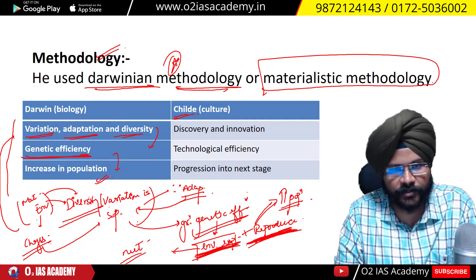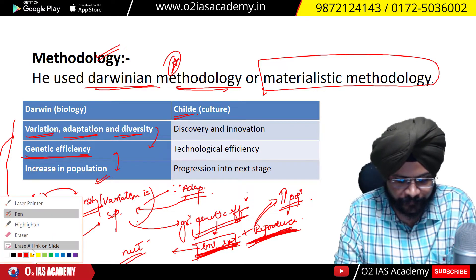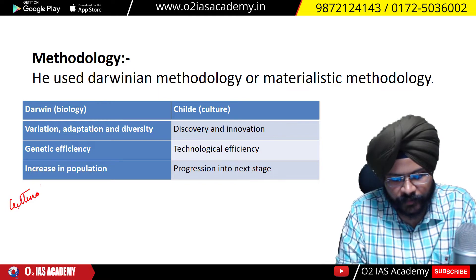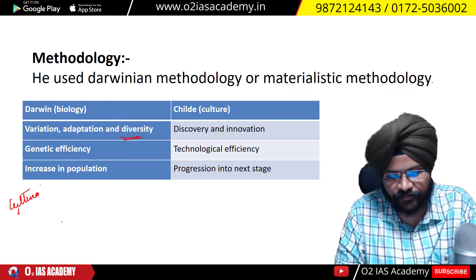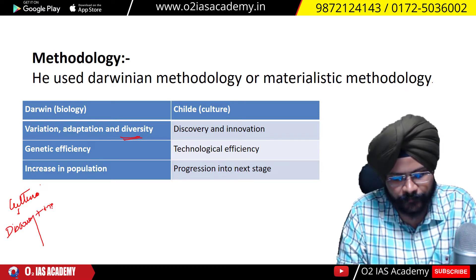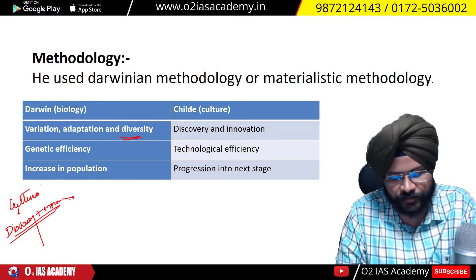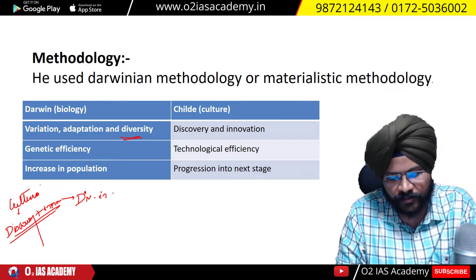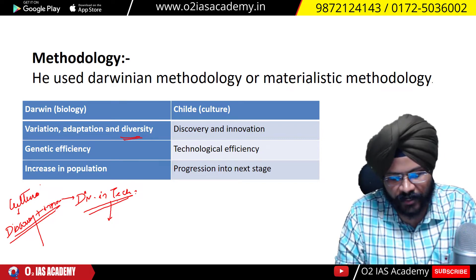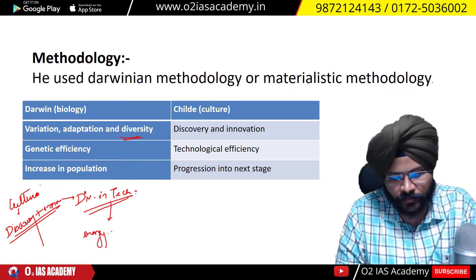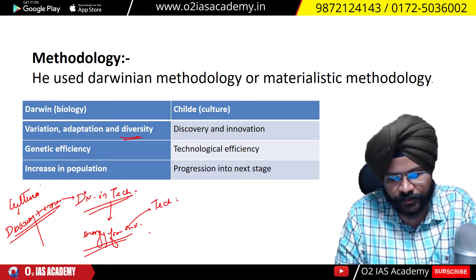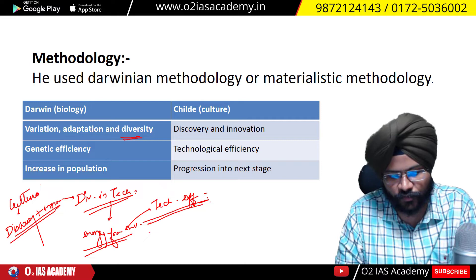Now, how did G.V. Childe adapt this to culture? G.V. Childe said that in culture, just as there was species diversity in biology, there is discovery and innovation in culture. Due to discovery and innovation, there is diversity in technology. The technology that will be able to extract more energy from the environment will have more technological efficiency.